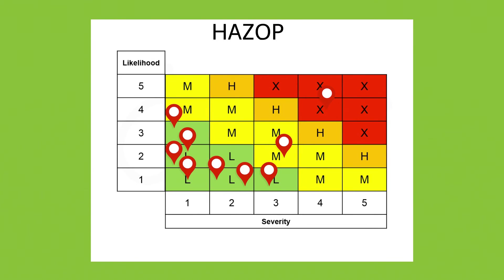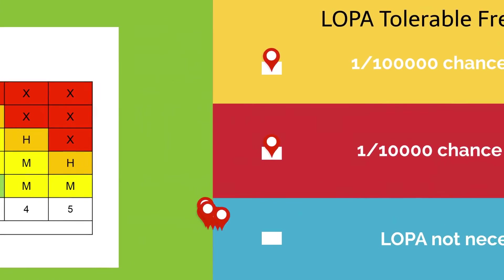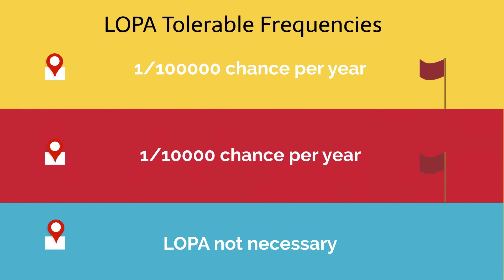The key difference between a HAZOP and a LOPA is the decision criteria. In a HAZOP, the company's risk matrix is used as the decision criterion, where risk rankings represent a qualitative range. For example, a low likelihood level in a risk matrix could be considered an event with a range of 1% to 10% chance per year. On the other hand, in a LOPA, the decision criterion is based on a specific tolerable event frequency. For example, a common industry accepted tolerable event frequency for a worker fatality is 1 in 10,000 chance per year. The next question is: how do we reach the target tolerable event frequency? How would we demonstrate a 1 in 10,000 chance of fatality? How does a LOPA actually work?